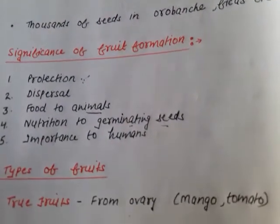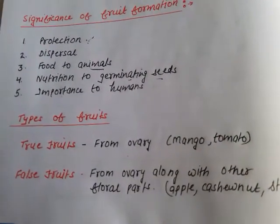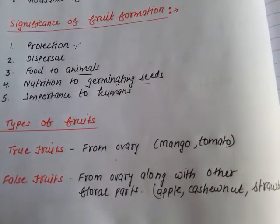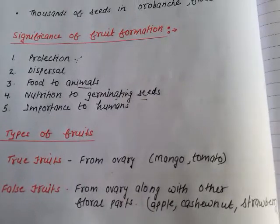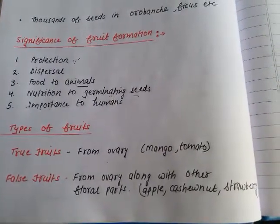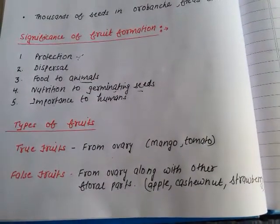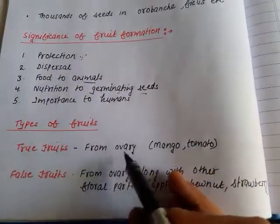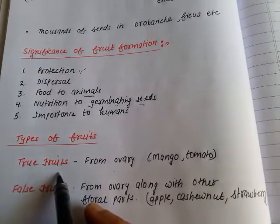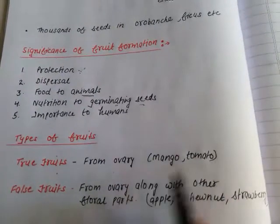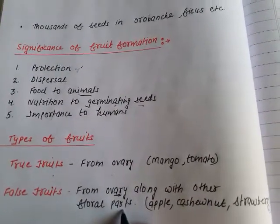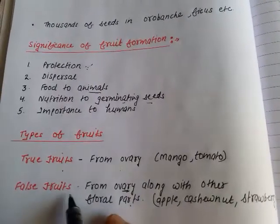Now there are two types of fruits: true fruits and false fruits. True fruits are those that are formed from the ovary only, and other non-carpellary parts are not involved. Example: mango and tomato. False fruit is when, along with the ovary, the other floral parts are also involved in the formation of fruits.